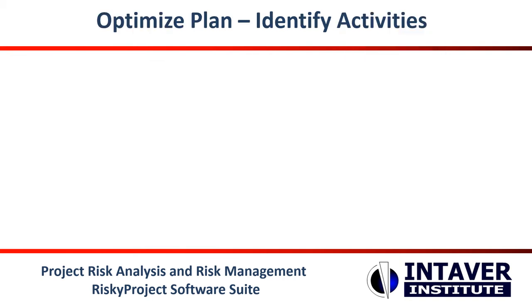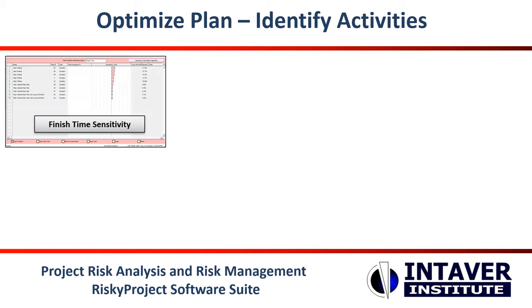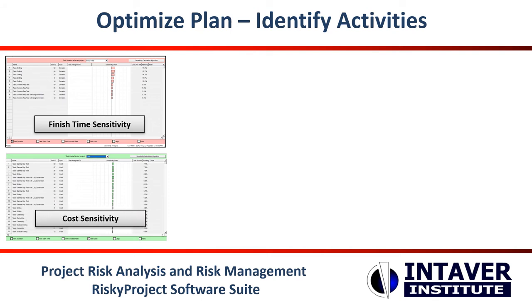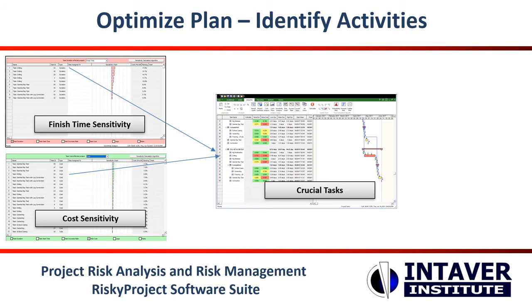The next step is to optimize your plan. Further optimization of the schedule can be performed using sensitivity analysis. There are two main visualizations that should guide these efforts: sensitivity and crucial tasks. The sensitivity analysis for cost, finish time, and other project parameters shows which activity or cost has the most impact on the project parameter — for example, how much the finish time of an activity is impacting the finish time of the project. The crucial task view presents similar information in a Gantt chart view, showing the sensitivity ranking of an activity for cost and schedule.